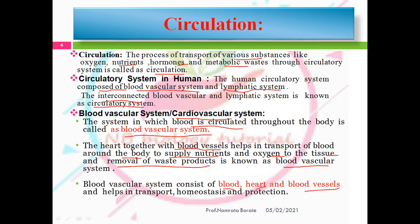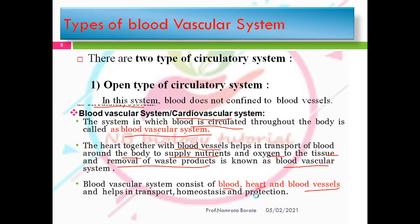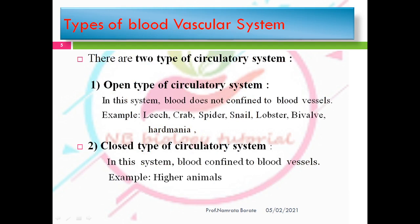The blood vascular system basically consists of blood, heart, and blood vessels. It helps in transport, homeostasis — meaning maintaining a constant internal environment — and protection. There are two types of blood vascular system: the open type of circulatory system and the closed type of circulatory system.